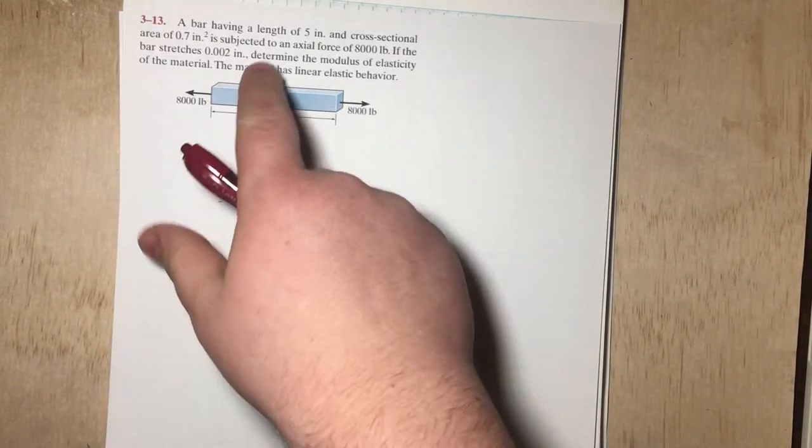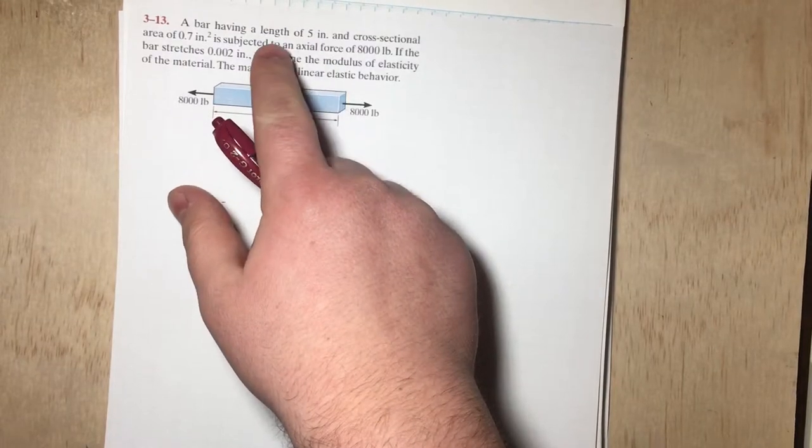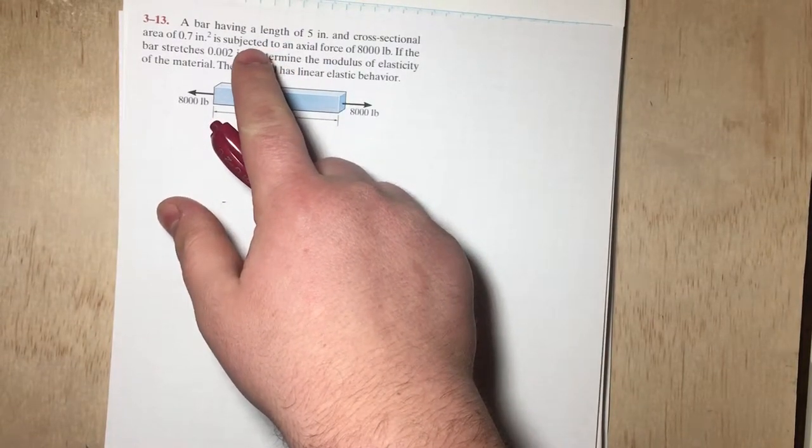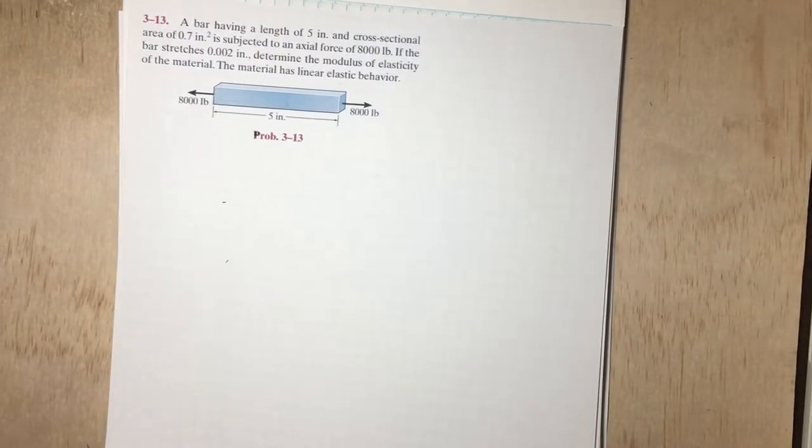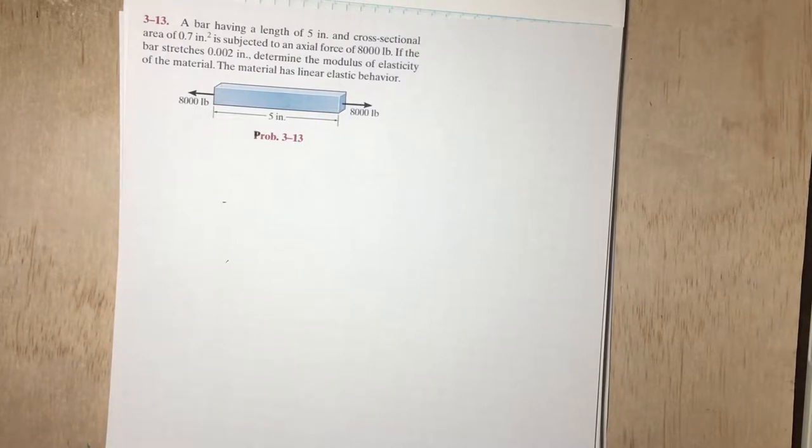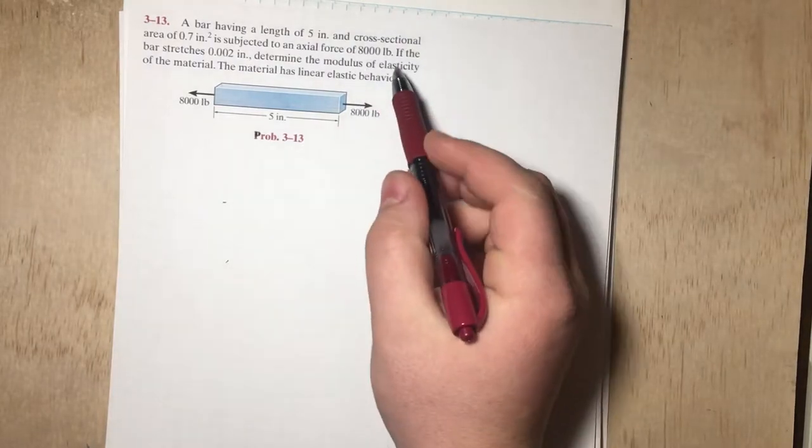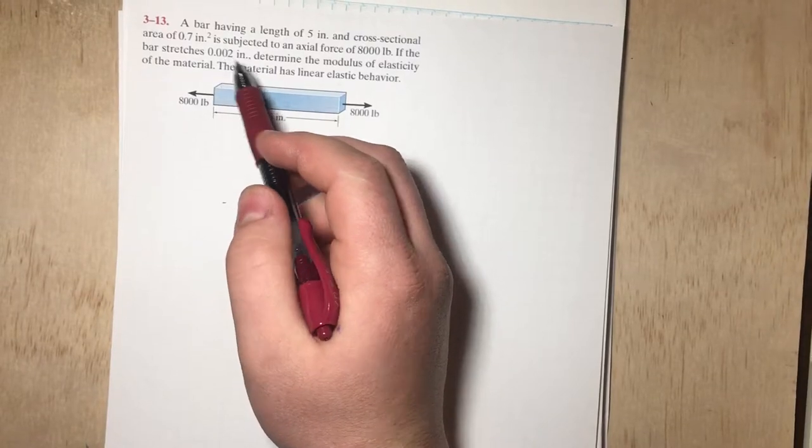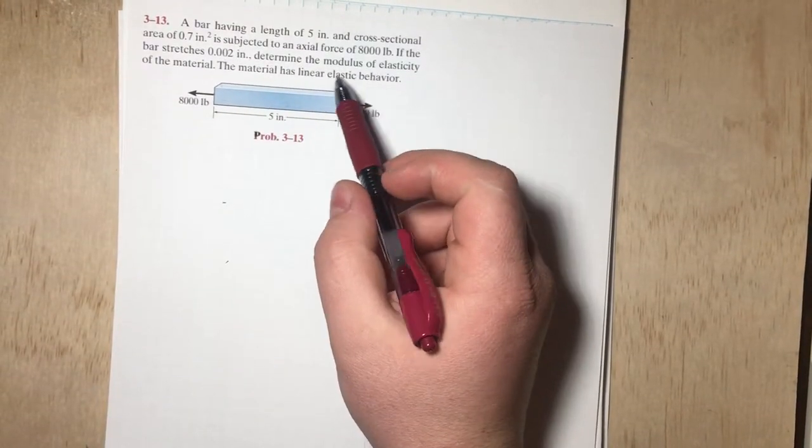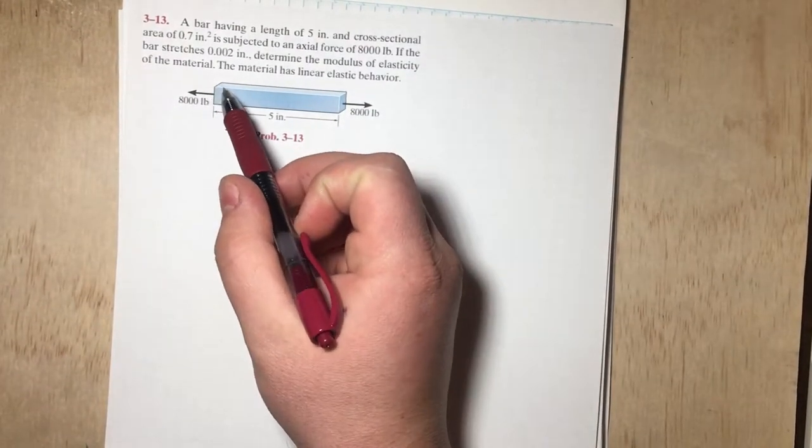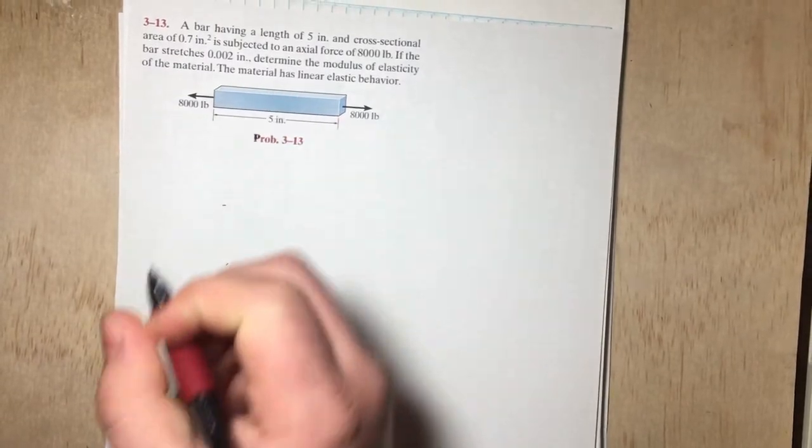So in this particular problem, we have a bar having a length of 5 inches and a cross-sectional area of 0.7 inches squared that is subject to an axial force of 8,000 pounds. If the bar stretches 0.02 inches, determine the modulus of elasticity of the material. The material has linear elastic behavior.